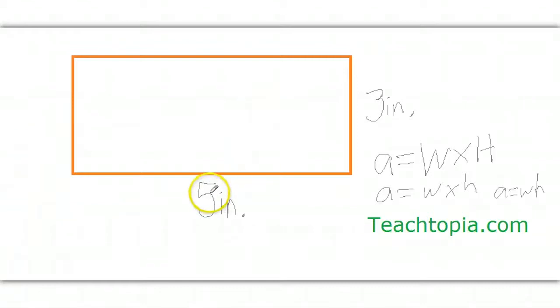So, what is the width? It is clearly 5. What is the height? 3. 5 times 3 equals 15.